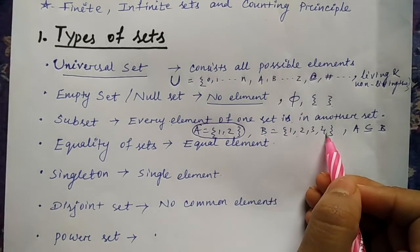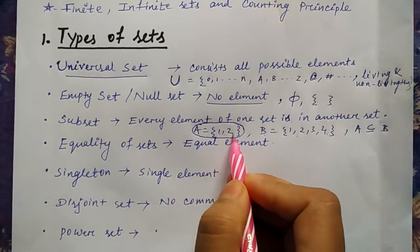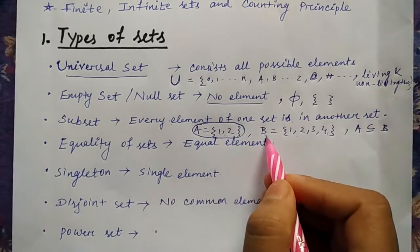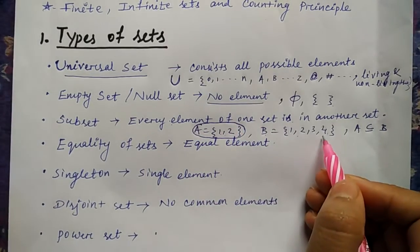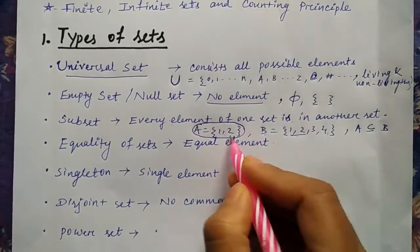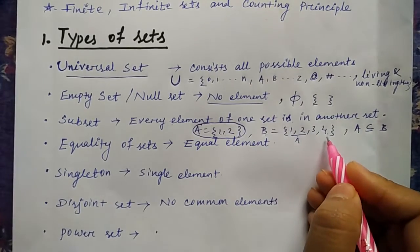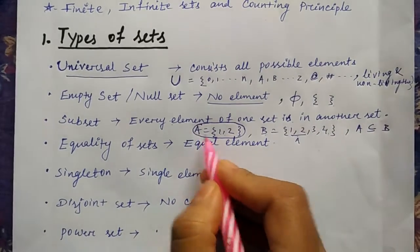It means every element of one set is present in the other set. Clear? Because 1, 2, whatever is there with A, all together it is present in B. And B has some extra elements. It means first A's elements are there with that some extra element. So A is a subset of B. You're clear?